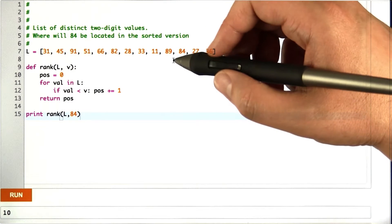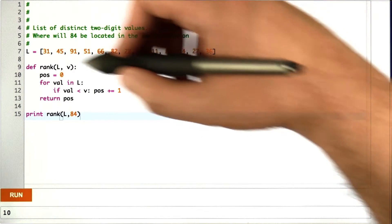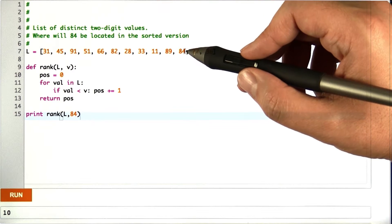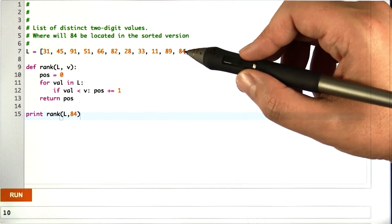So here's a little bit of Python code, very simple, to do exactly this. Here's our list from the example, and we want to know where 84 will fall, what position 84 will be in in the sorted list.